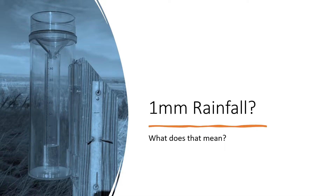Hello and welcome back. In this video we are going to be discussing a really interesting but simple topic — the unit of rainfall. Normally whenever you are watching weather forecasts or news, you might have heard that rainfall is measured in millimeters. For example, the rainfall is one millimeter. So the question is: what does this actually mean? We're not going to talk about how rainfall is measured, but rather how we can imagine the extent of the rainfall just by looking at that unit.